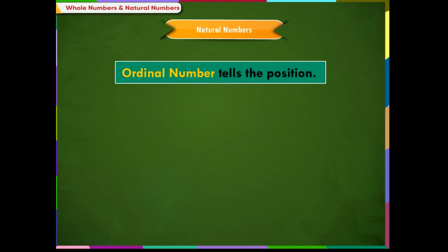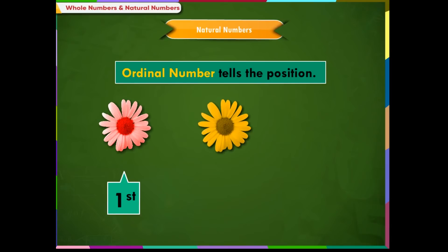An ordinal number tells the position of an object in a sequence. For example, the red colored flower is the first. The yellow colored flower is the second. The pink colored flower is the third and so on.